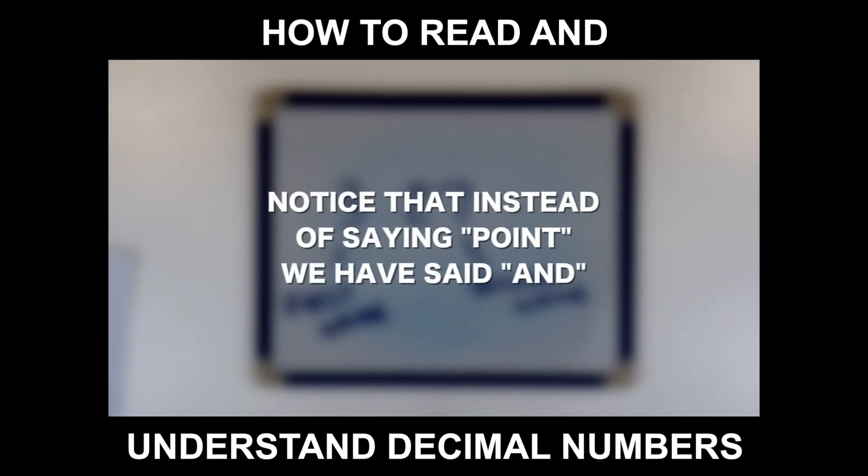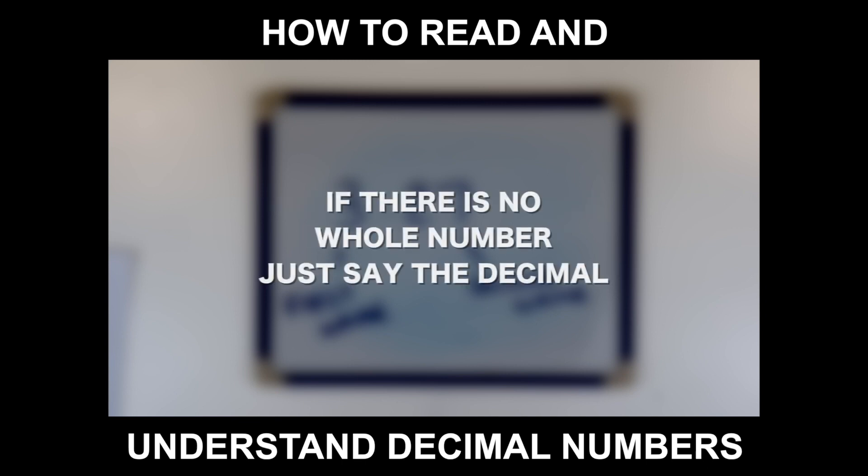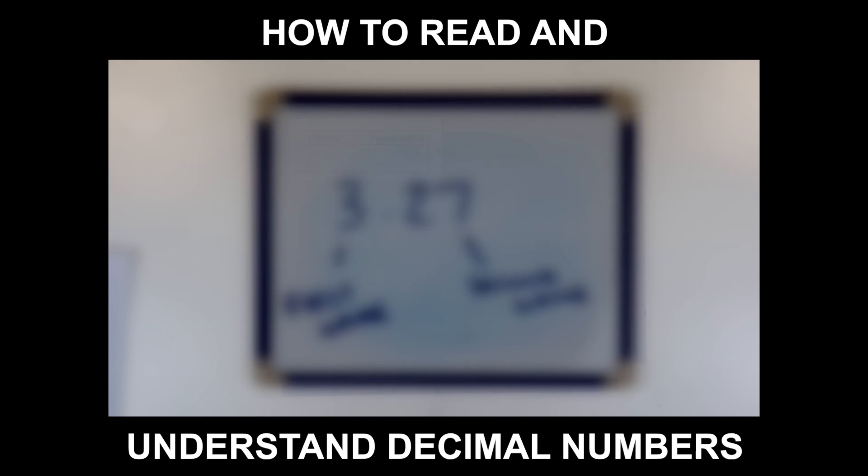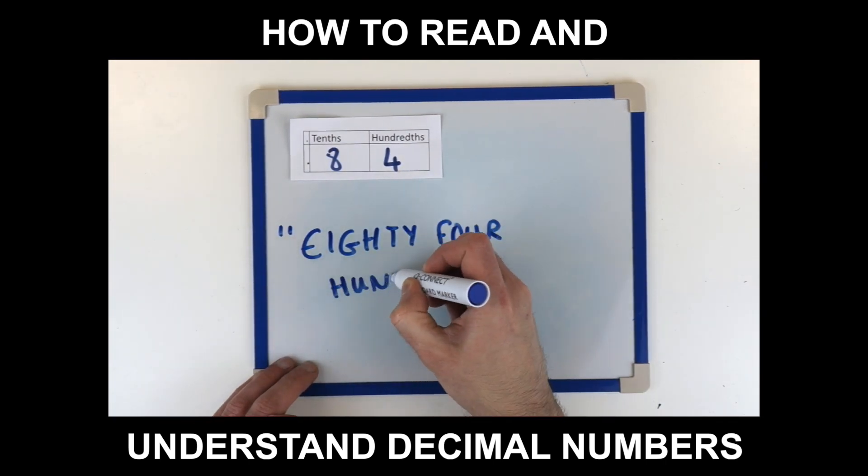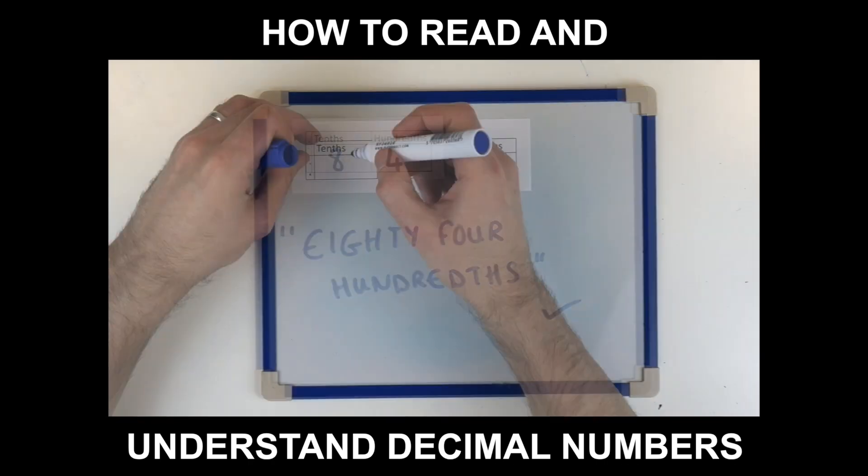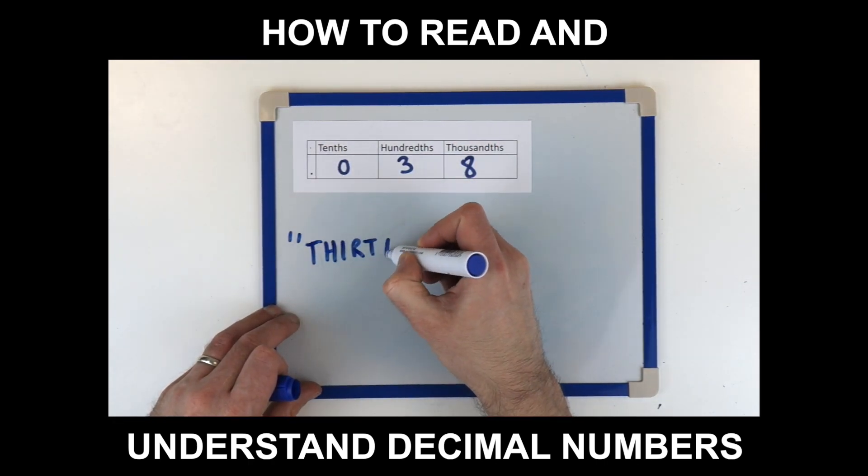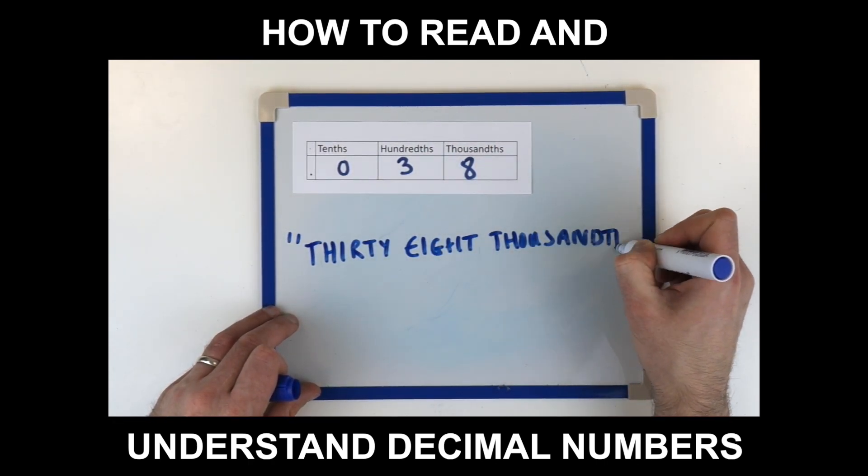Notice that instead of saying point, we have said and. If there is no whole number, then just say the decimal. For example, 0.84 is said as 84 hundredths. 0.038 would be said as 38 thousandths.